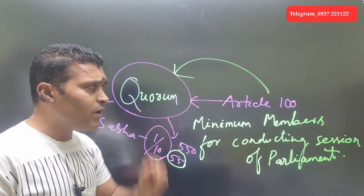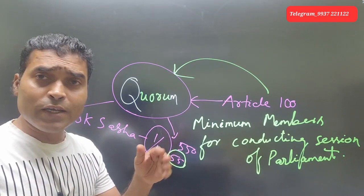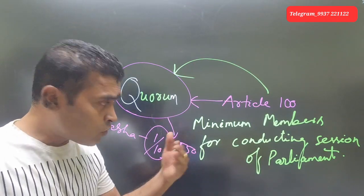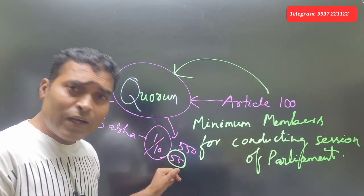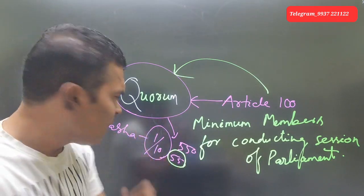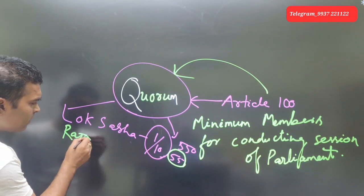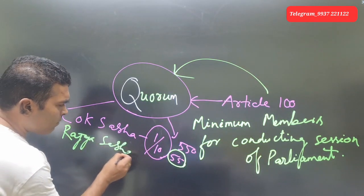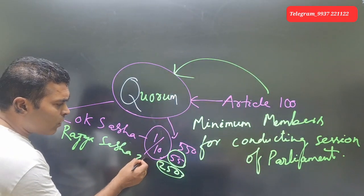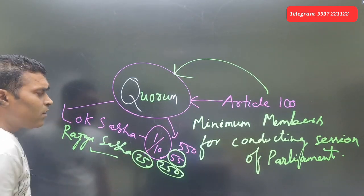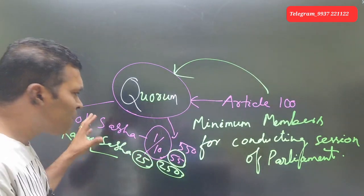Under Article 100 of Indian constitution, the speaker of Lok Sabha can suspend or you can say can adjourn the Lok Sabha if the minimum members are not present in the house. This is actually quorum, so the meeting and the session starts with this.